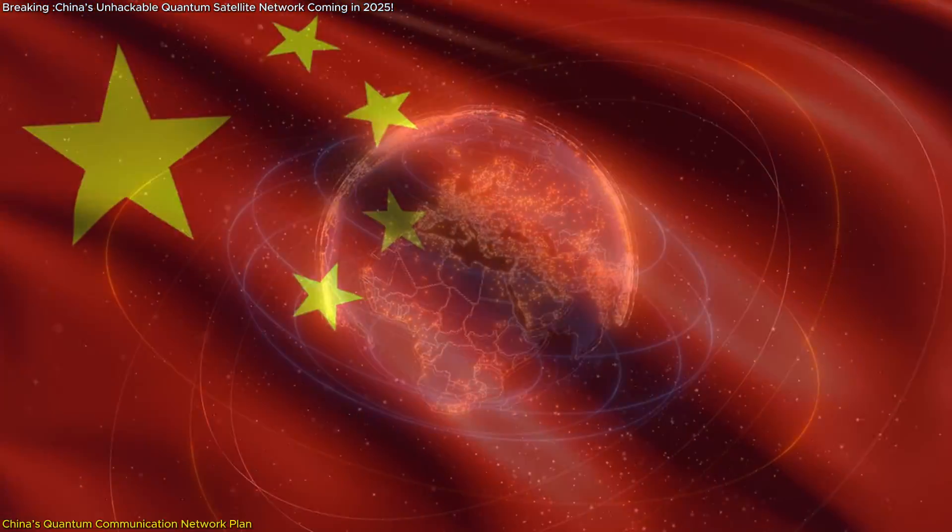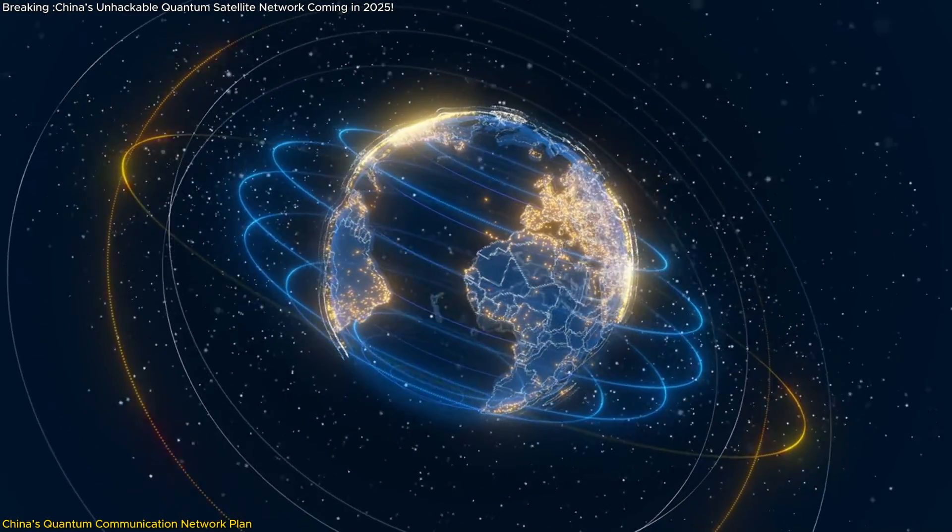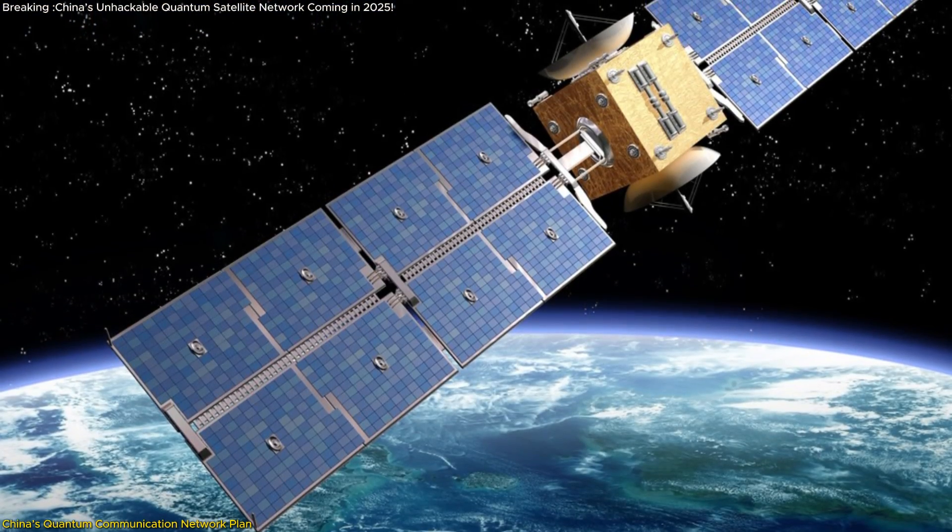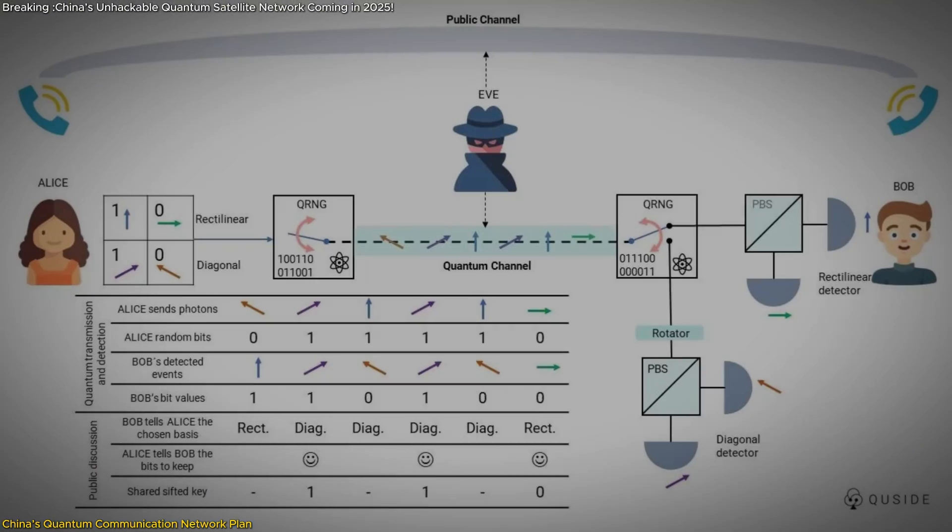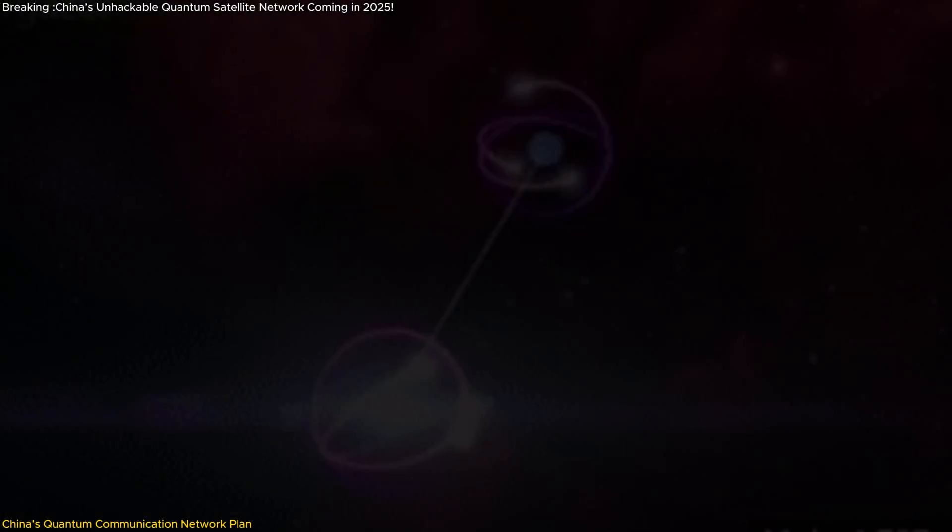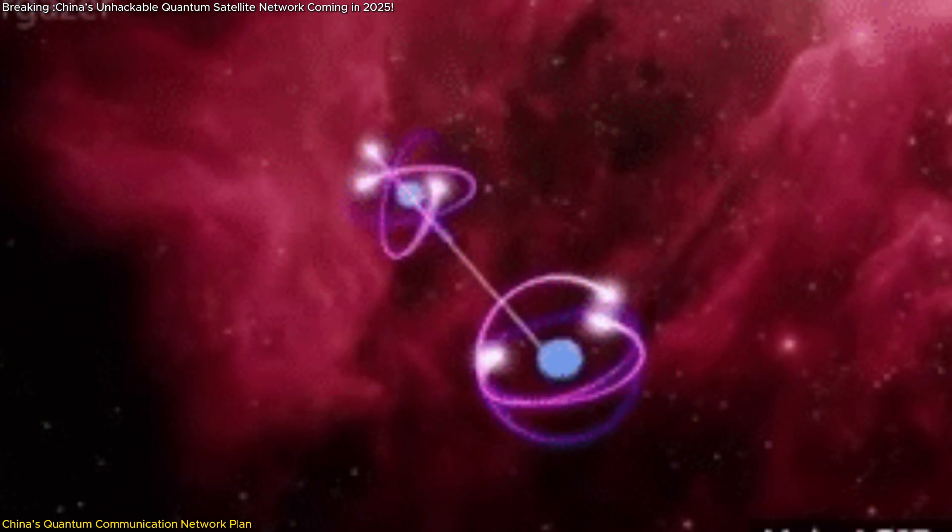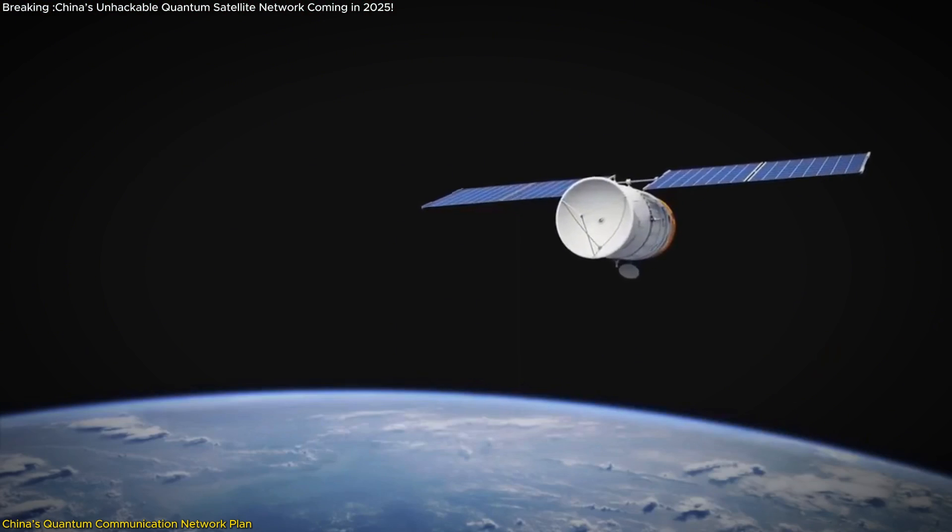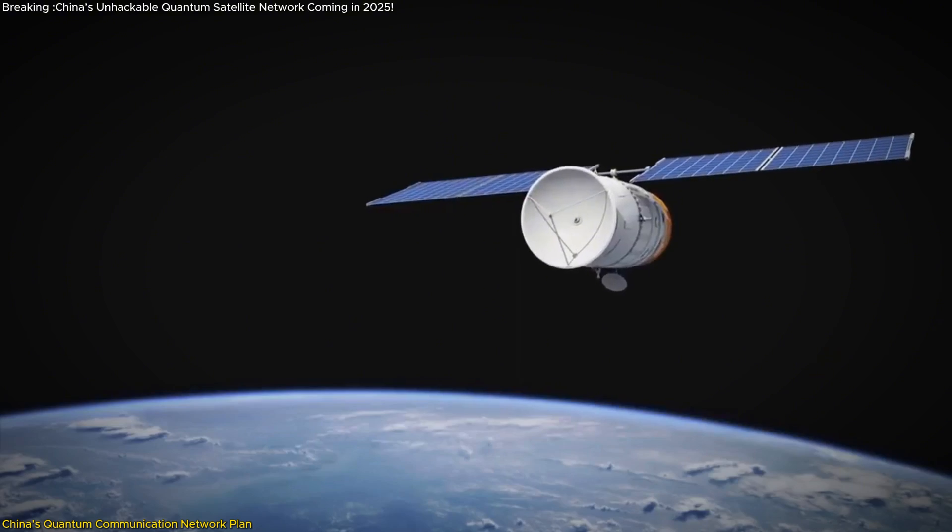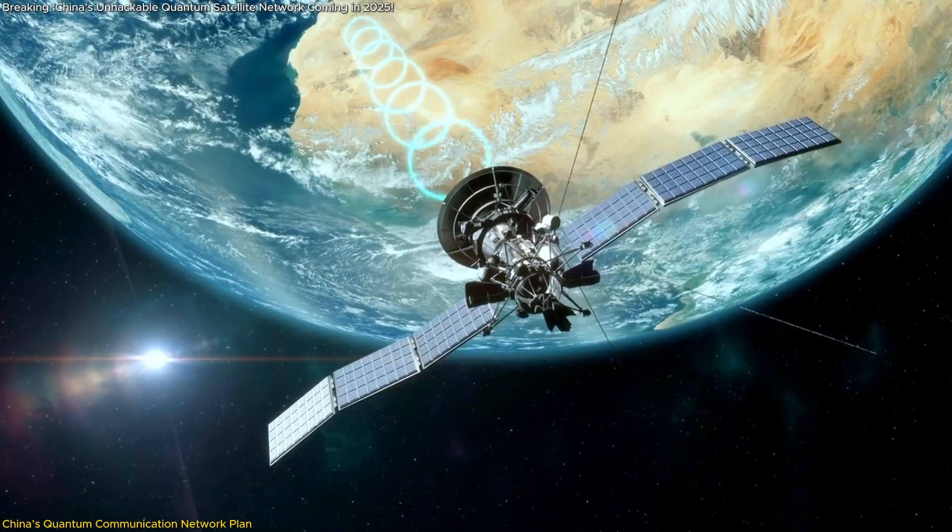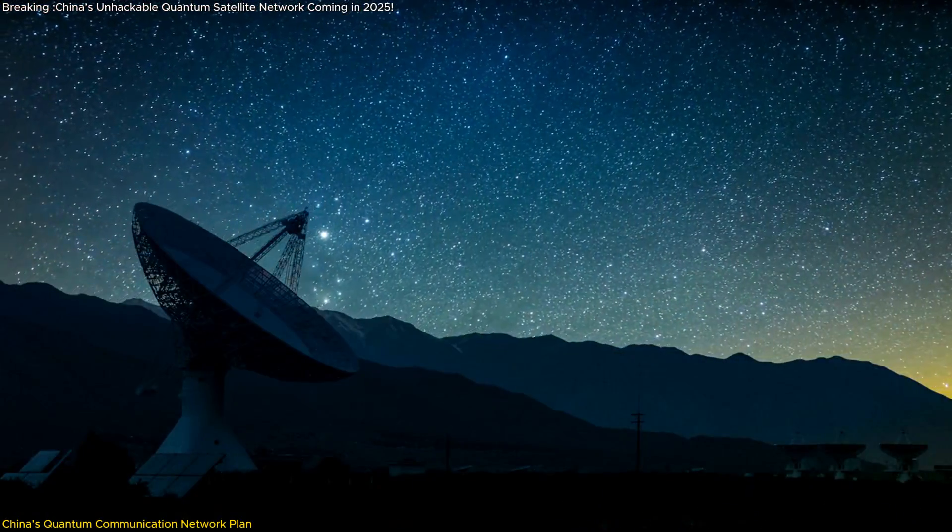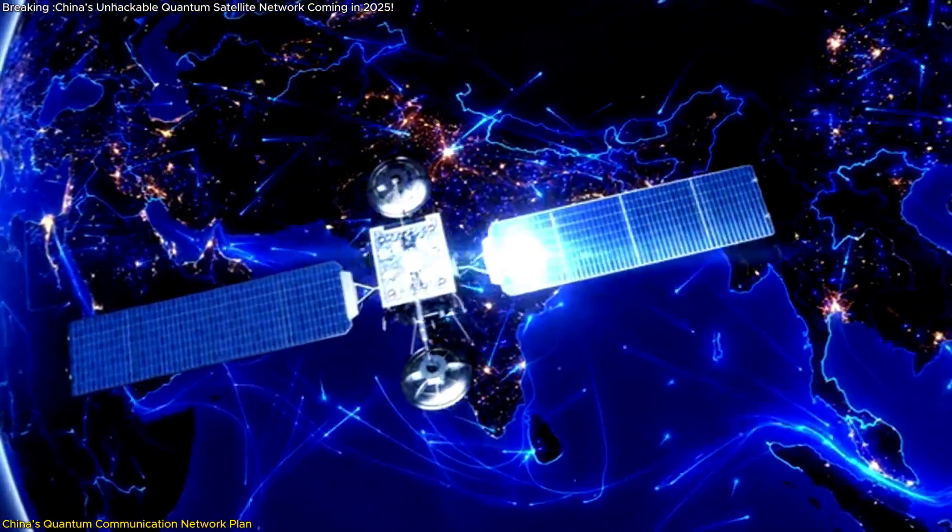China's approach to creating a global quantum communication network is nothing short of revolutionary. Building on its early success with the MOSI satellite in 2016, which was the first to demonstrate quantum key distribution QKD and quantum entanglement in space, the country is now set to launch two to three new quantum communication satellites into low-Earth orbit LEO by 2025. These satellites are designed to function as secure nodes that will link with ground stations and establish a framework for a larger network.